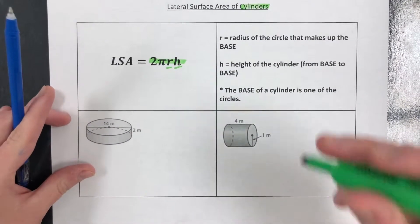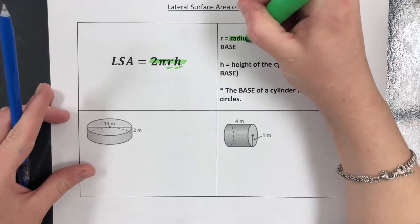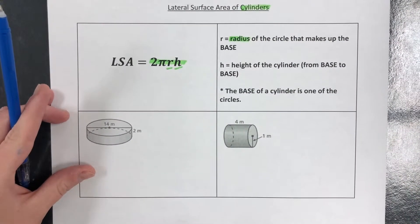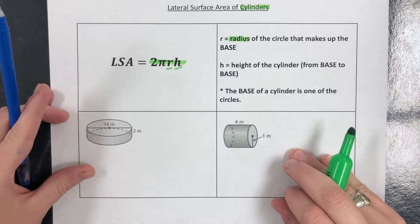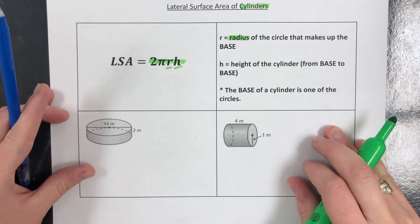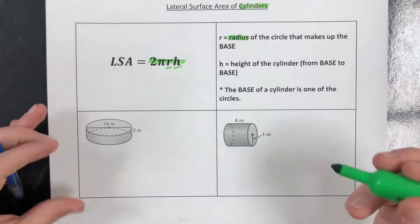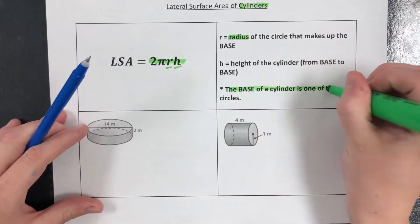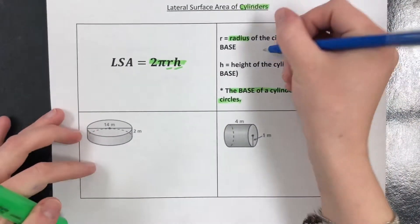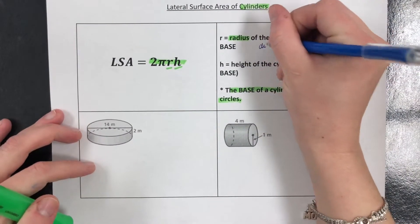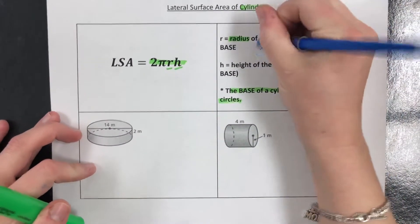So just to review, the radius of a cylinder is the circle that makes up the base, or it comes from the circle that makes up the base.